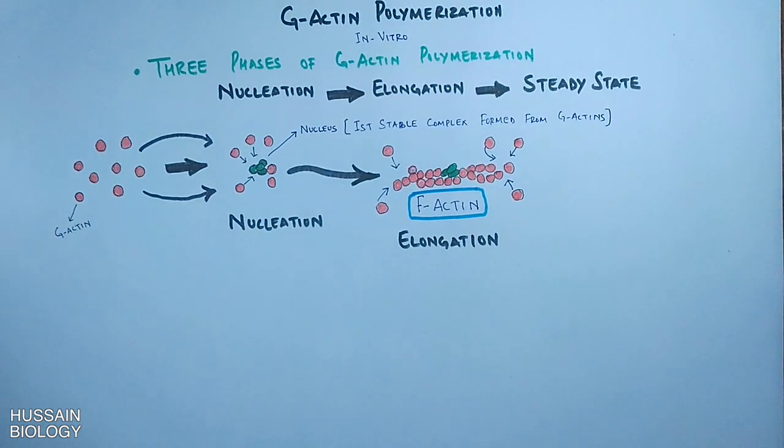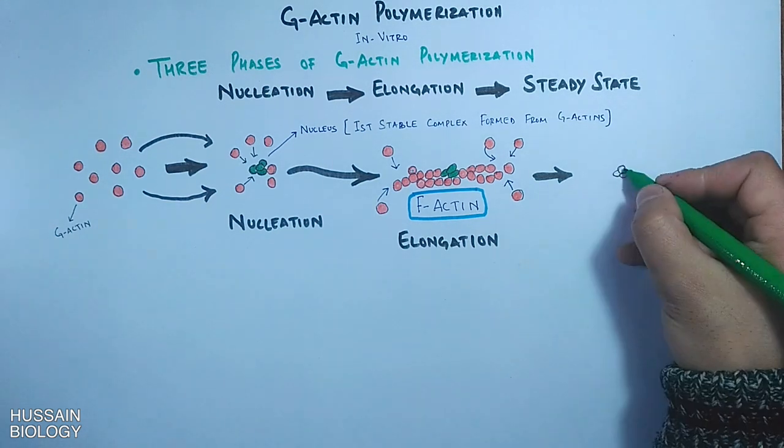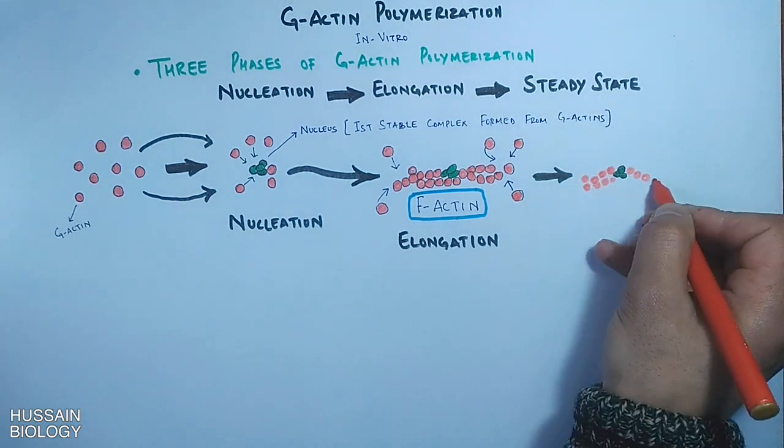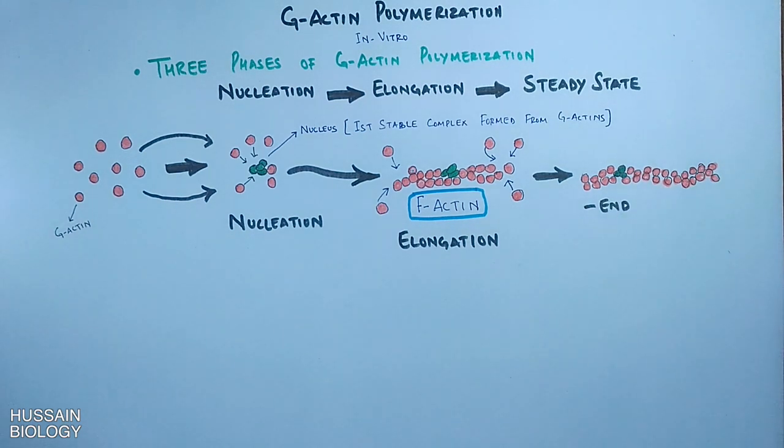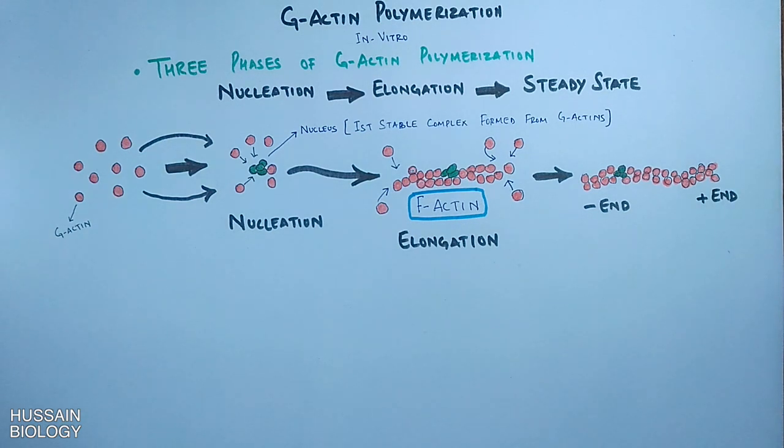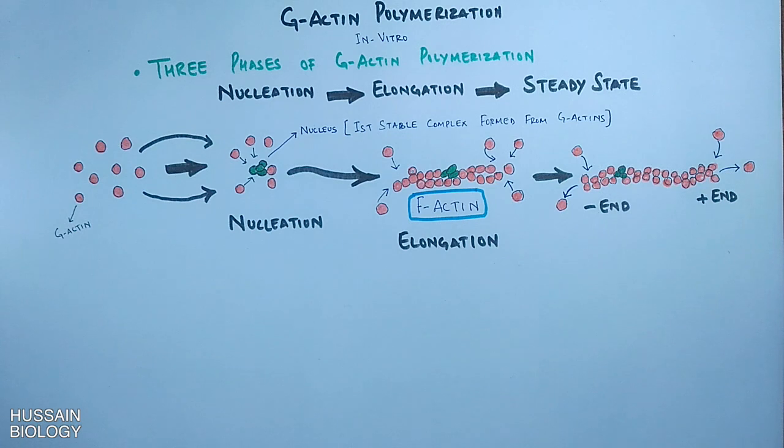Furthermore, in the third phase, the ends of actin filaments are in equilibrium with monomeric G-actins. That's why this phase is termed as steady state phase. In this steady state phase, G-actin monomers exchange with subunits at the filament ends, but there is no net change in the total length of filaments.